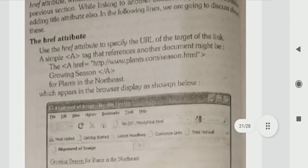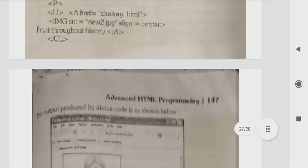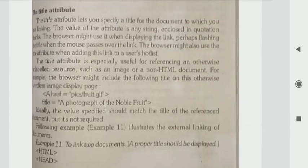Next is the href attribute. This link will be described in the URL. Next is the title attribute. What is the title attribute? The title attribute defines the title. We can link the attributes. The value of this attribute is a string. It is enclosed in quotation marks.